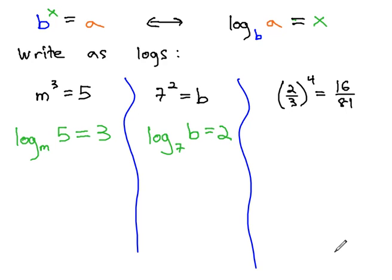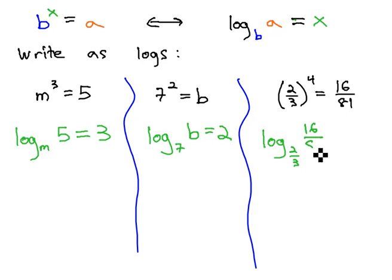Log base 7 of b equals 2 is the same as 7 squared equals b. We can even do this with fractions. In the example, 2 thirds to the 4th power equals 16 over 81. If we want to write it as a log, again as a subscript, we write the base of the problem, which is 2 thirds. Put the answer inside the log — 16 over 81 — and it will always equal the exponent of 4.